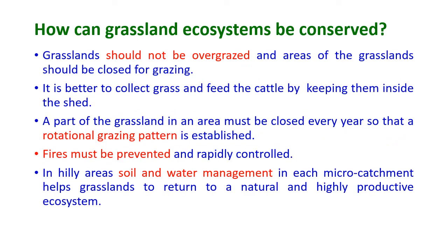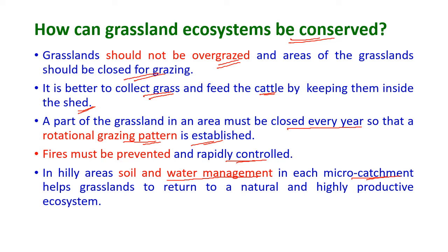How grassland ecosystems can be conserved: grasslands should not be overgrazed. Areas should be closed for grazing, and it is better to collect grass and feed cattle inside sheds. A part of the grassland must be closed every year so that a rotational grazing pattern can be established. Fire must be prevented and rapidly controlled. In hilly areas, soil and water management in each micro-catchment area helps the grassland return to a natural and highly productive ecosystem.